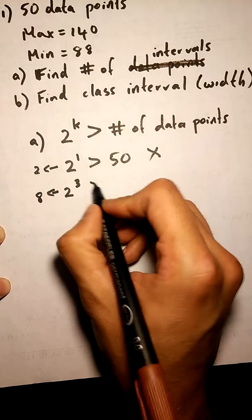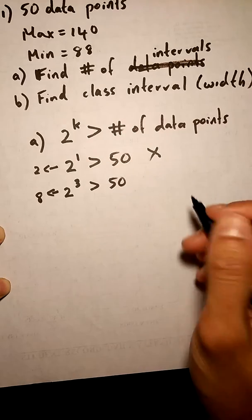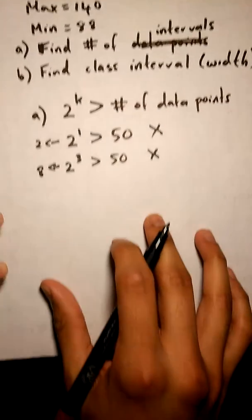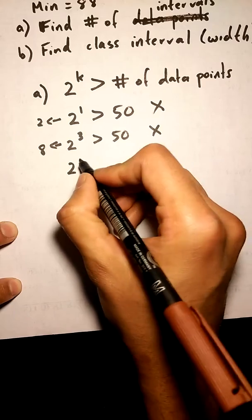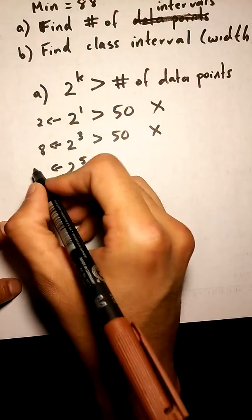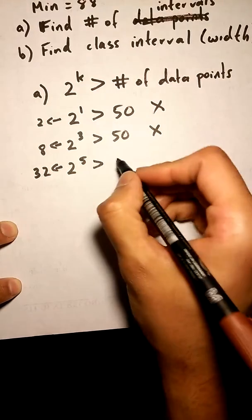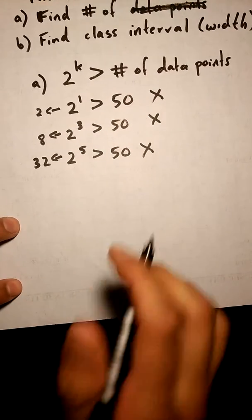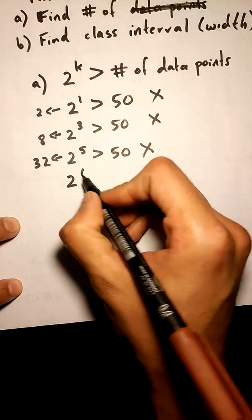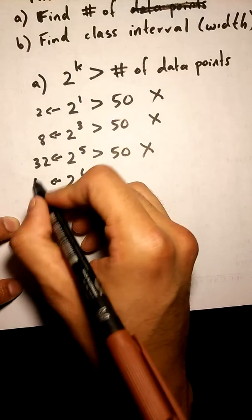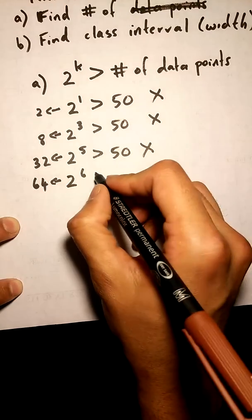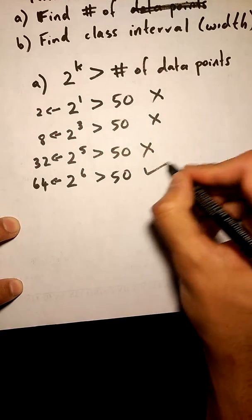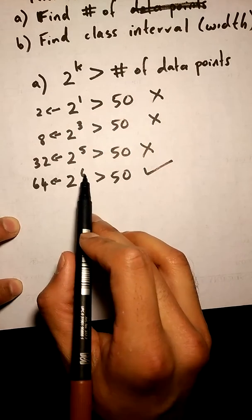So we're going to keep going. 2 to the power of 5, well that's 32. We are getting closer, but again that's not greater than 50. And last, let's try 2 to the power of 6, which is 64. So once we reach that first number that's greater than 50, we know that this value in our exponent is basically our number of intervals.